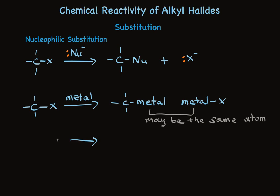Many would say that the most important reaction of these alkyl halides with metals is the Grignard reaction, the reaction with magnesium metal. And in that case, carbon becomes bonded to magnesium, and that same atom is bonded to the halogen.